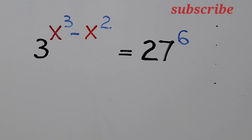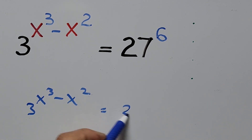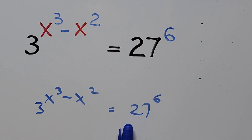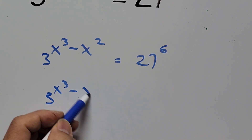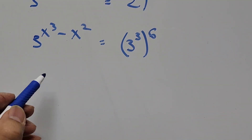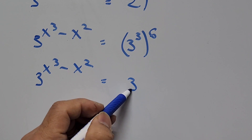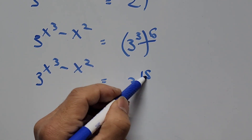So 3 to the power of x cubed minus x squared equals 27 to the power of 6. Take a look at the bases — 27 and 3 have something in common. 27 can be turned into base 3: 27 equals 3 cubed. So the equation becomes 3 to the power of x cubed minus x squared equals 3 cubed to the power of 6.